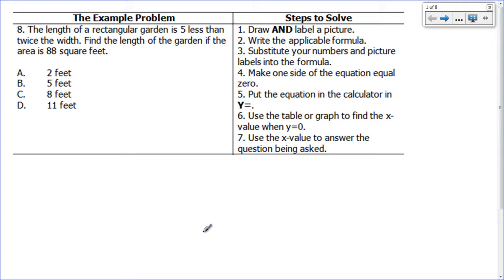The length of a rectangular garden is five less than twice the width. Find the length of the garden if the area is 88 square feet.